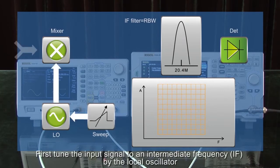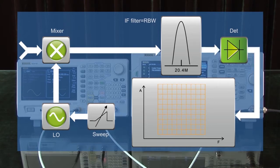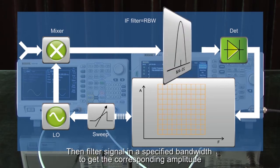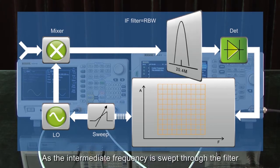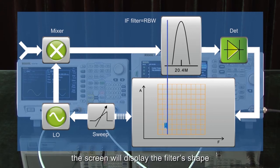First, tune the input signal to an intermediate frequency by the local oscillator. Then filter the signal in a specified bandwidth to get the corresponding amplitude. As the intermediate frequency, or IF, is swept through the filter, the screen will display the filter's shape.